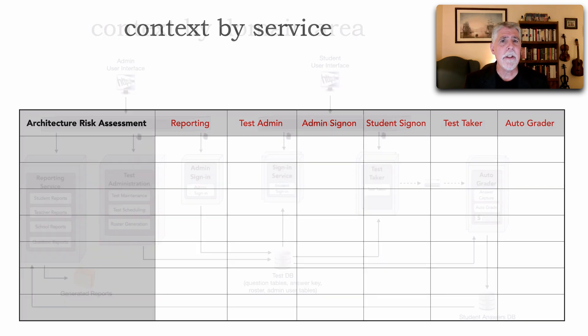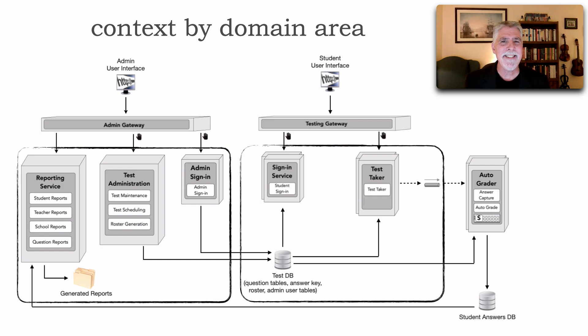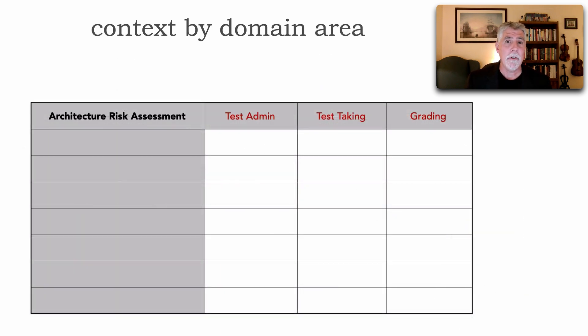And so for that there's another aspect we can look at the context: that is assess the risk of this architecture by domain area. Meaning instead of each individual service, let's assess the overall risk for the admin portion of the system and then the real-time runtime test-taking portion of the system and the back-end auto grading which is all asynchronous that runs in the background. And so now we've got three areas in which we can now do an assessment. The assessment here is going to be more coarse-grained, however it is inclusive of all the services involved with that particular area. And so these are two choices we have within the context part of our assessment dimension.